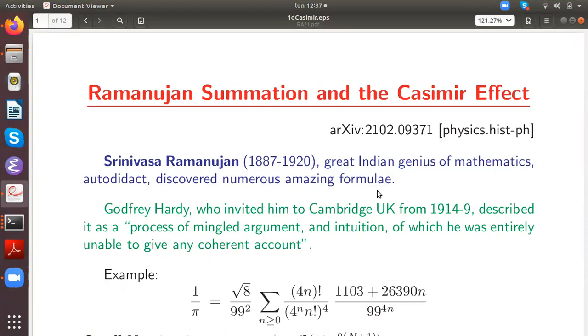Hello. This is a review talk about Ramanujan's summation and the Casimir effect. It is devoted to Srinivasa Ramanujan, the great Indian genius of mathematics who died 101 years ago. He was a pure autodidact, but he discovered a number of amazing formulas.